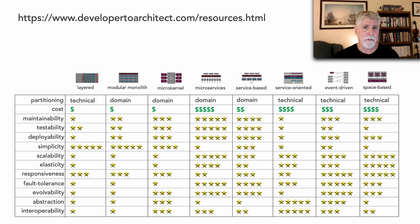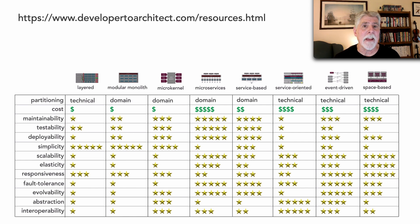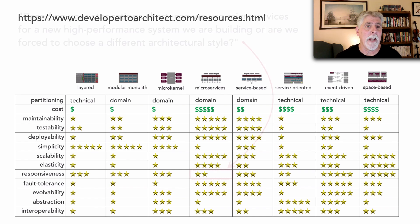When Neil Ford and I wrote the Fundamentals of Software Architecture book, we created star ratings for each architecture style based on various architectural characteristics. One of the things I'm going to show you in this lesson is that we didn't mean for these star ratings to be restrictive — as in, if we need this and it doesn't support it, we can't use it. I did get a couple of questions over the past few months that I wanted to show you as a way of interpreting some of these star ratings.